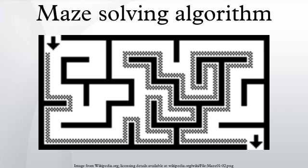The Random Mouse, Wall Follower, Pledge, and Trémaux algorithms are designed to be used inside the maze by a traveler with no prior knowledge of the maze, whereas the Dead End Filling and Shortest Path algorithms are designed to be used by a person or computer program that can see the whole maze at once.